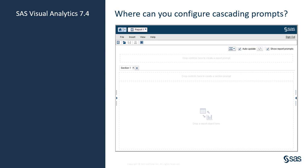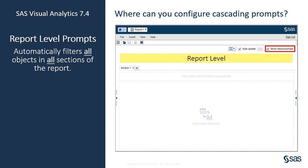Now let's talk about where you can configure cascading prompts. This moves into the structure of the Visual Analytics report. First is the highest level of prompting: report level prompts. You must check the box in order to see the report level prompt area. These prompts automatically filter all objects in all sections of the report. If you have multiple prompts in this area, they are combined with an AND operator.